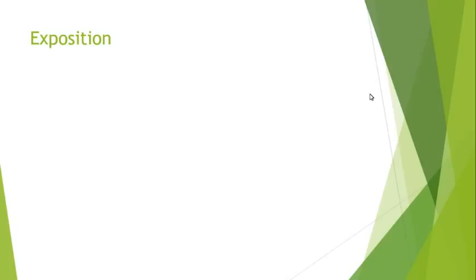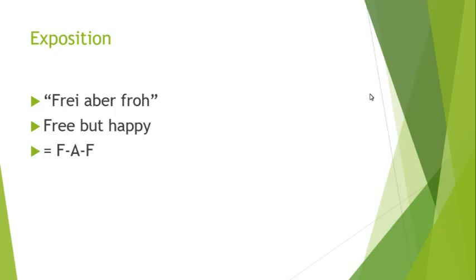A motto that Brahms adopted in his early life was free aber froh, or free but happy. By going from F major in the first theme to A major in the second theme and back to F major in the closing material, we get an FAF scheme that represents free aber froh.